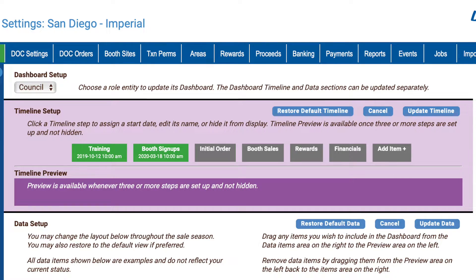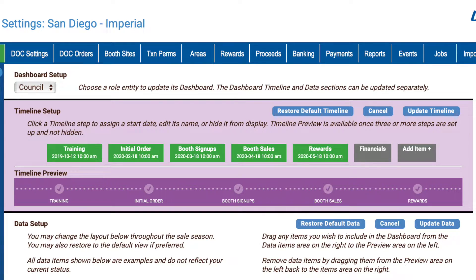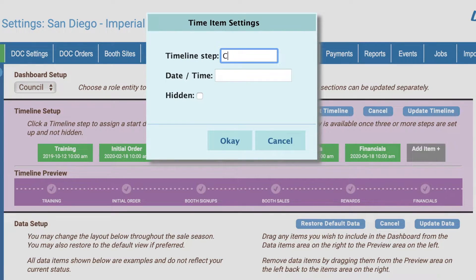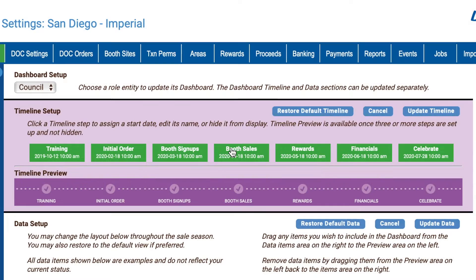Simply repeat the process for all the desired steps in your timeline and you'll see them populate the timeline preview. To add a custom 7th step to your timeline, click on the gray Add Item button to open its Time Item Settings box. Be sure to name it by providing a timeline step property in addition to a start date. Click Done in the calendar picker and OK to save your changes. You will now see your custom timeline step in the timeline preview element.